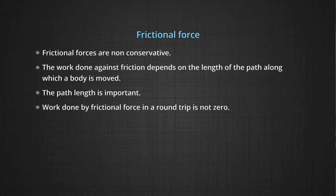Work done by frictional force in a round trip is not zero. Think about it — the wear and tear of the shoe sole, the wear and tear of the car tire, the heat that is generated — all this tells us that frictional force in a round trip has lost some energy. Therefore, you cannot have the work done equal to zero when making a round trip. By round trip we mean starting from an initial point, traveling a distance, and coming back to the same initial point. In frictional forces, you will never get a zero value as you would with conservative forces.